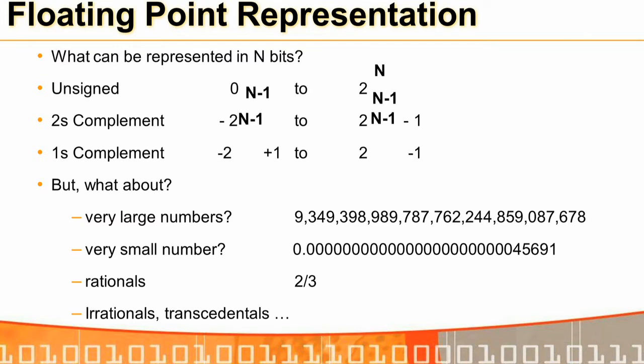Now let us look at floating point representation. Before going to that — with n bits, if unsigned we can represent 0 to 2 power n minus 1; if 2's complement, minus 2 power n minus 1 to 2 power n minus 1 minus 1; with ones' complement, minus 2 power n minus 1 plus 1 to 2 power n minus 1 minus 1.